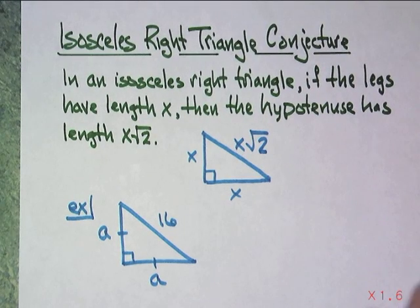It will work every time. And this is right triangle conjecture. In an isosceles right triangle, if the legs have length x, then the hypotenuse has length x root 2. And there I drew a picture of it. So you can put that in your notes.